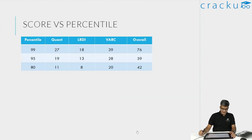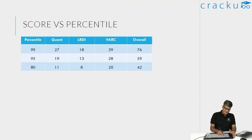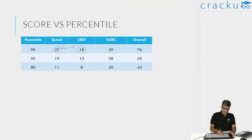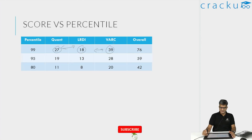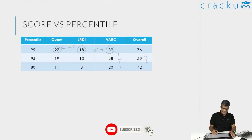Looking at the overall percentile, 99 percentile overall will be around 76. In quant, 25 to 27 marks will be 99 percentile. In LRDI, around 18 marks. Both quant and LRDI are on the difficult side. VRC is on the slightly easier side, so in this mock you should have ideally scored very well in VRC. The 99 percentile mark for VRC is 39. The percentiles for 95 and 80 percentile are also given.